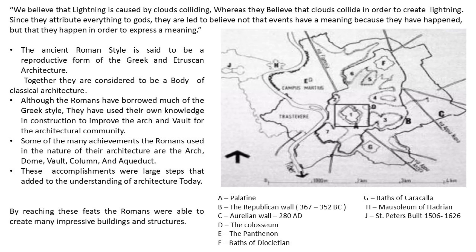Now let us start with the basic planning of the Roman Empire. As you can see in the map, 'A' is showcasing the Palatine, which means high level office, which is attached to the royal courts. This term was first used in ancient Rome for the chamberlains of the emperor.